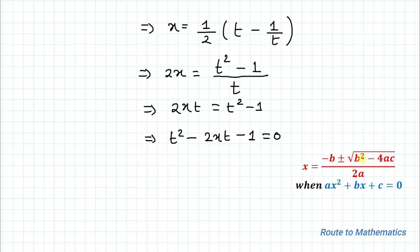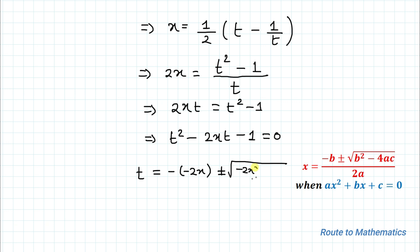Now applying the quadratic formula: x equals (−b ± √(b² − 4ac)) / 2a, when our equation is ax² + bx + c = 0, where a, b, c are constants. In this quadratic equation, our constants are a = 1, b = −2x, and c = −1. So t equals (−(−2x) ± √((−2x)² − 4(1)(−1))) / (2·1).